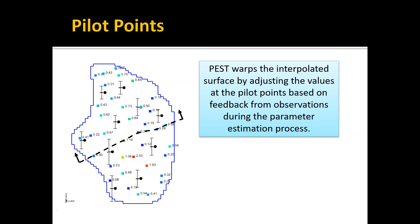During the parameter estimation process, PEST will warp each of these points. If you imagine a cross section intersecting this interpolated surface, each of the pilot points becomes like a handle that, as you move them individually up or down, you effectively warp the shape of that surface, which has a strong impact on how the model behaves.